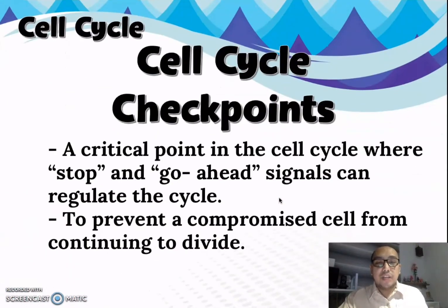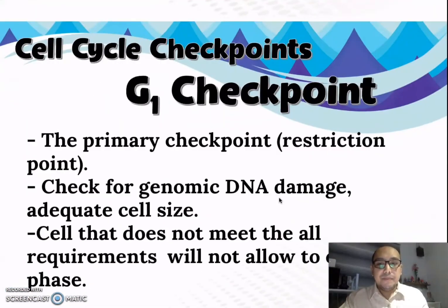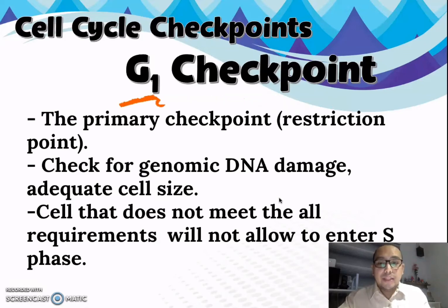Now let's talk about cell cycle checkpoints. Cell cycle checkpoints are critical points where stop and go-ahead signals regulate the cycle, preventing a compromised cell from continuing to divide — much like guards in school. The first is the G1 checkpoint, also known as the restriction point, which checks for genomic DNA damage and adequate cell size. A cell that does not meet all requirements will not be allowed to enter the S phase.